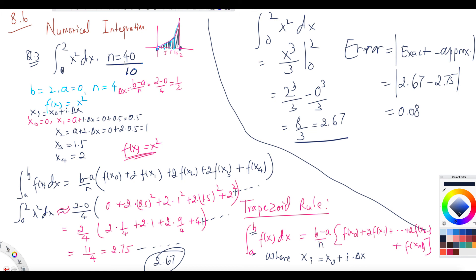We will discuss how many stripes are needed to approximate the area under the curve so that the error is smaller than a given error value. That's what we'll cover in the next video.